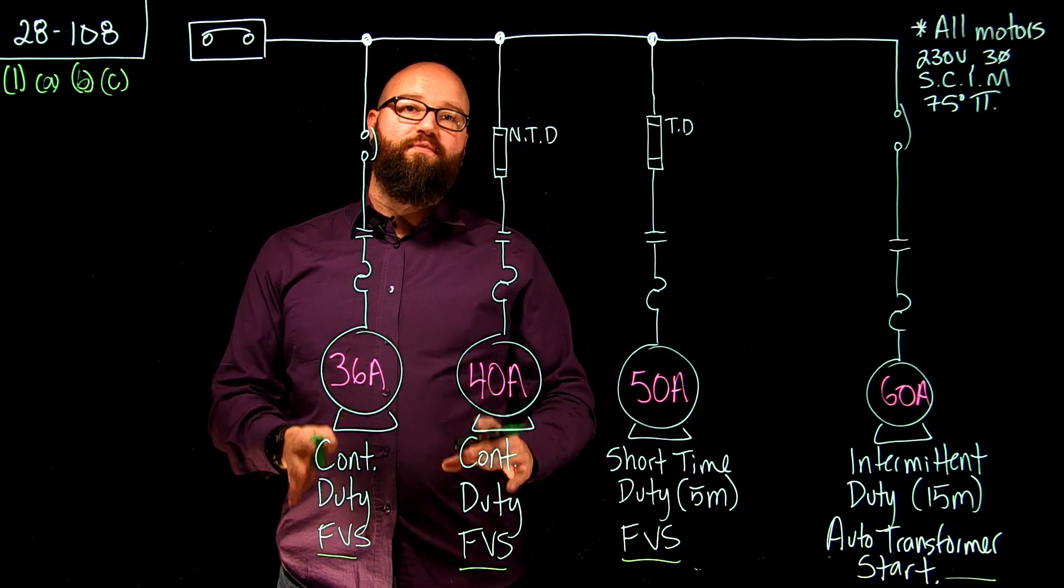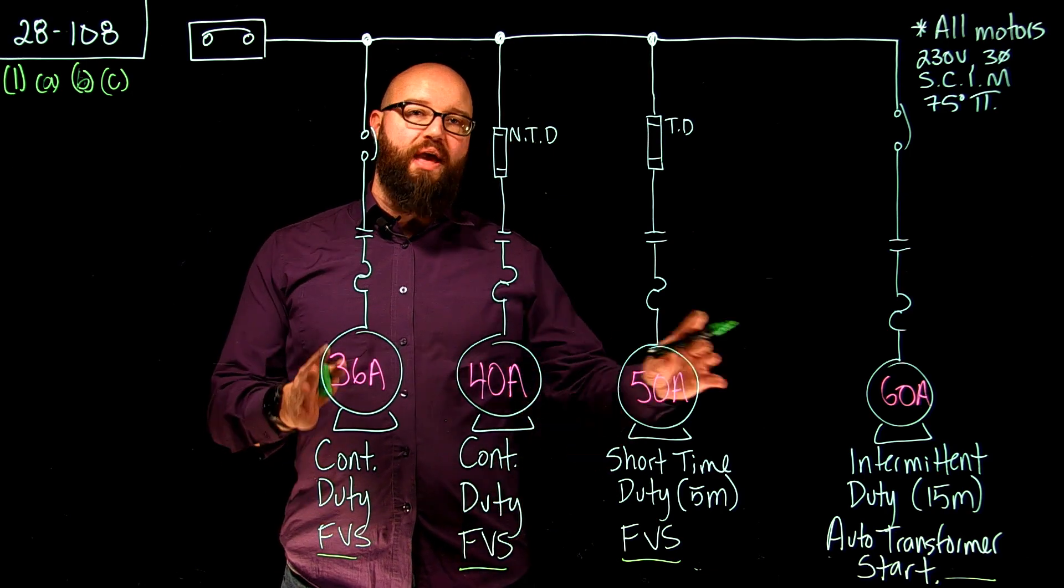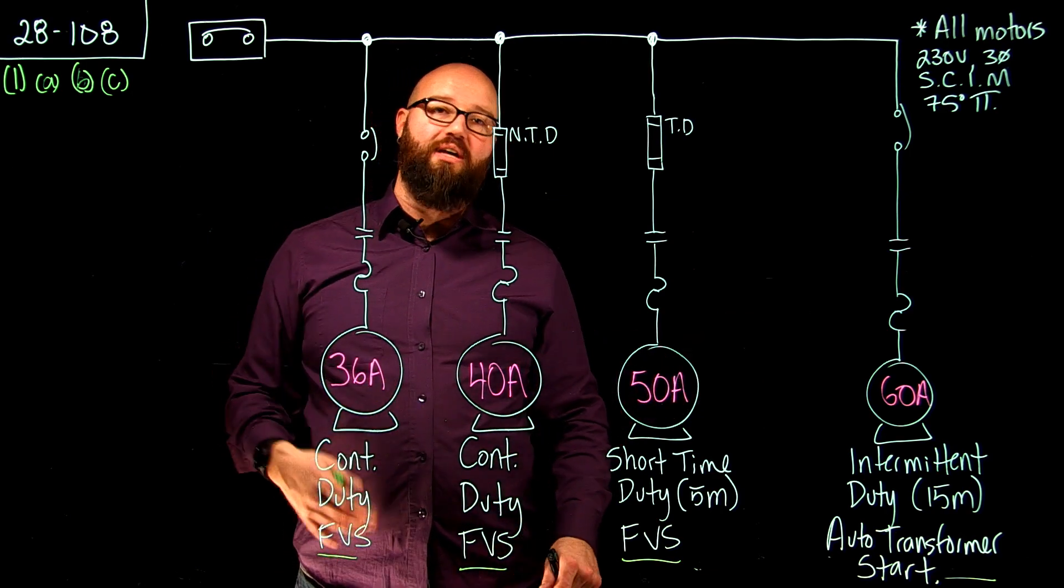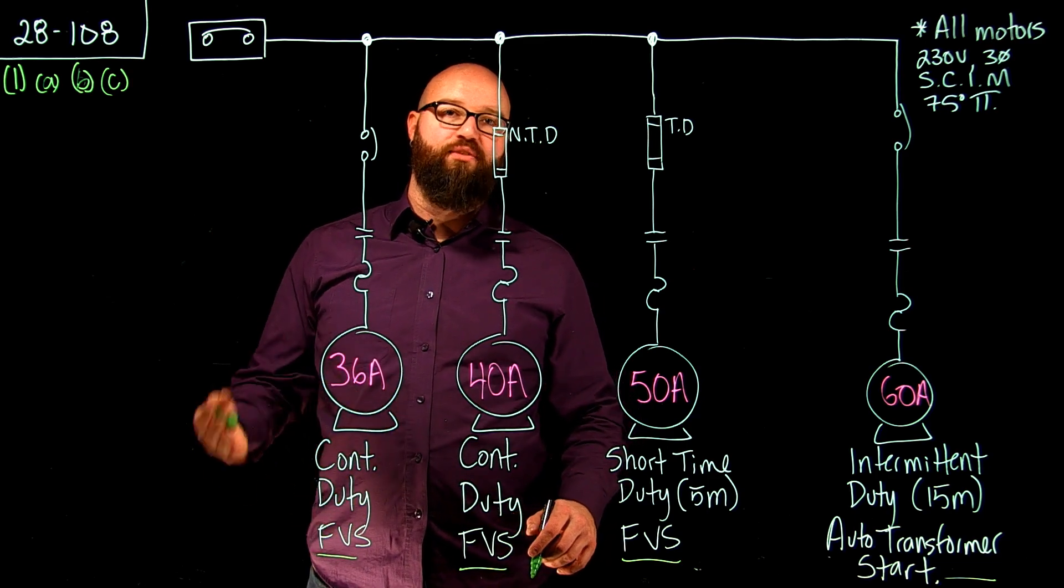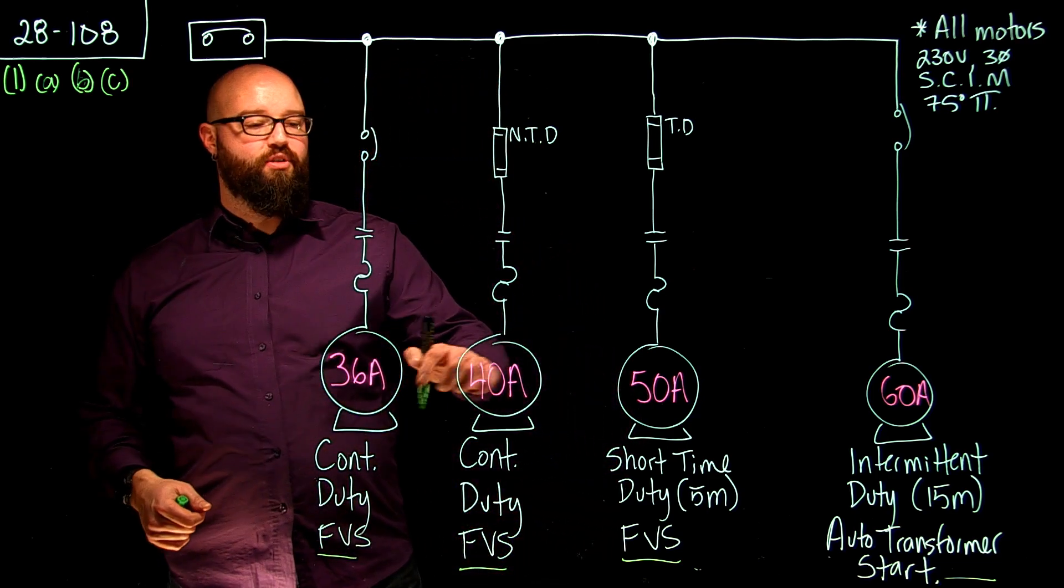It says for those motors that are in that bank that are continuous, again we're going to take the highest FLA of the continuous times 1.25 and then add the rest of the continuous. So we'll start with that.